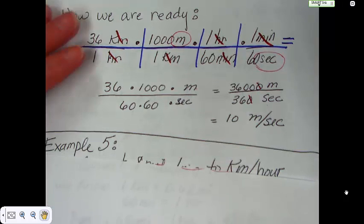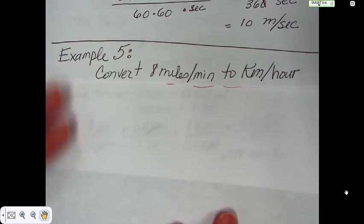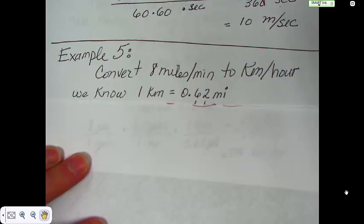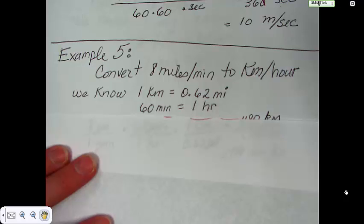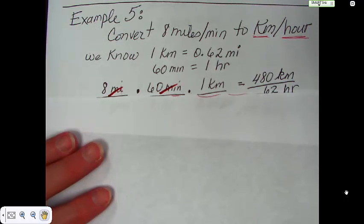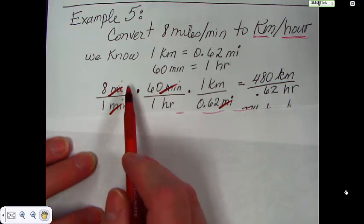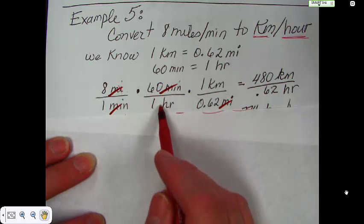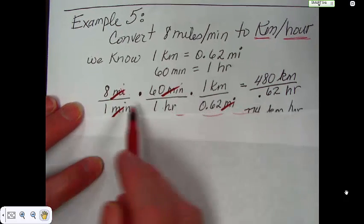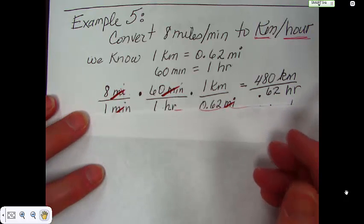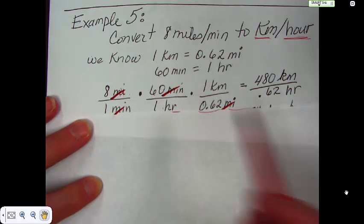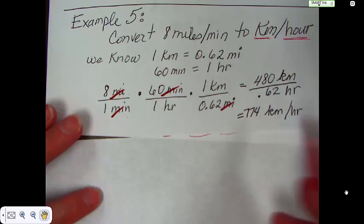Example 5: convert 8 miles per minute to kilometers per hour. We need to know that 1 kilometer is 0.62 miles, and 60 minutes equals one hour. We want kilometers per hour. So we start with 8 miles per one minute, then 60 minutes is one hour, and one kilometer is 0.62 miles. We eliminate the miles and the minutes, and we are left with 8 times 60 times 1 kilometer over 1 times 1 times 0.62 hours. That gives us 774 kilometers per hour.